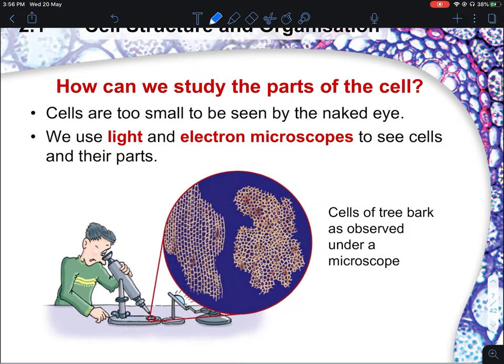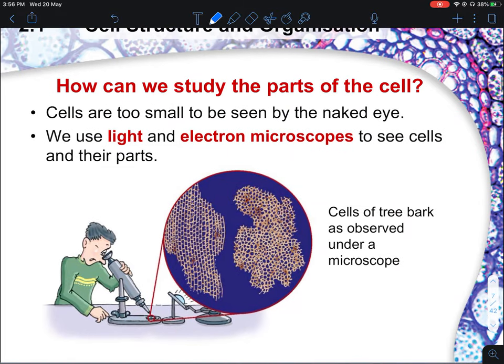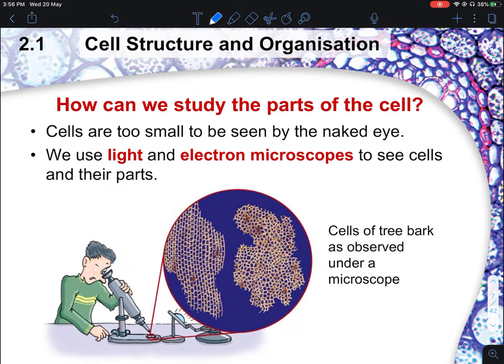So how are you able to study the cell? When we talk about cells, we need to be able to see them first. That's where we use the instrument — the microscope. There are two main microscopes in your syllabus that you need to know: the light microscope and the electron microscope.